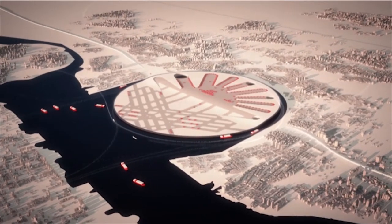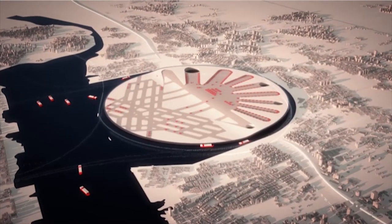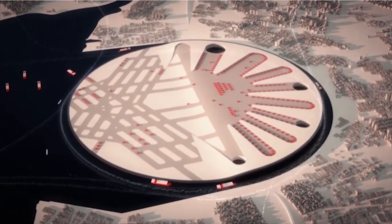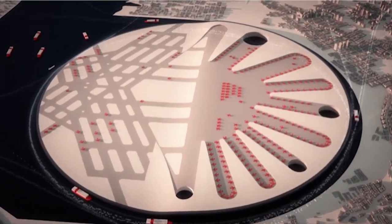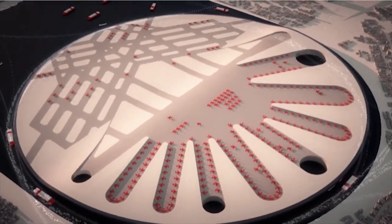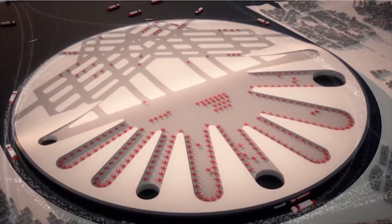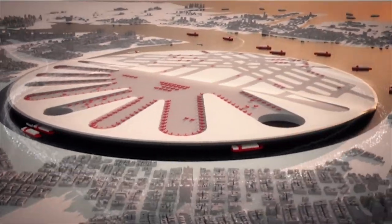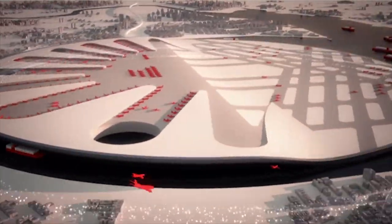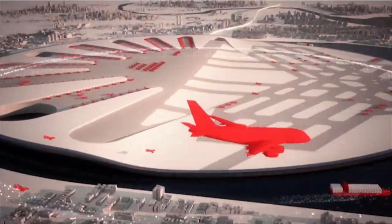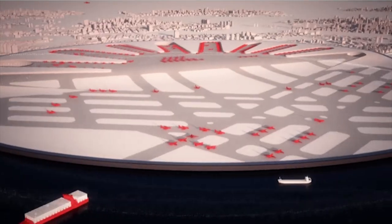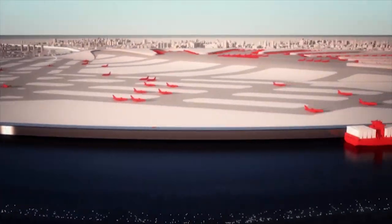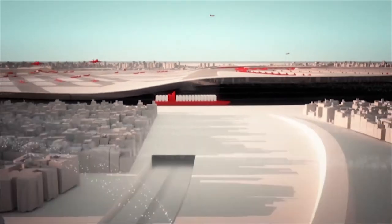A computer animation shows various forms of transportation interacting with the circular hub. Planes land, taxi, and park at the terminal. Shipping vessels and ferries travel a moat surrounding the hub. Cars and trains zip by via underground tunnels. The shareway connects the massive hub to the surrounding city.